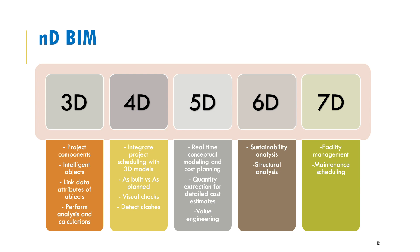5D BIM is used for cost estimation, linking unit costs associated with materials and workmanship to the model. 6D BIM is concerned with sustainability analysis — for example, conducting daylight or solar analysis of a building. 7D BIM involves using the model for facility management, where the person responsible for operations can utilize the BIM model to run the facility after project handover.